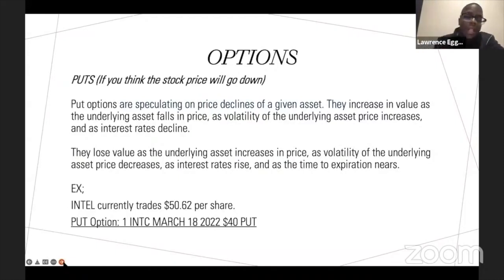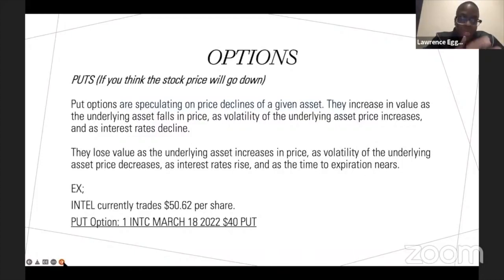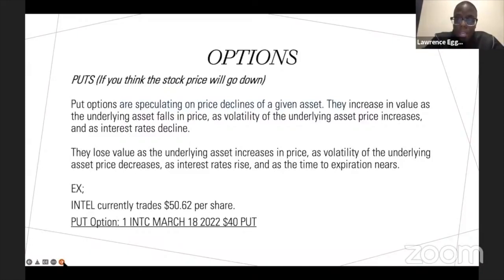On the opposite side, we have put options. Put options actually allow you to make money off of an asset's price going down. There's been a myth going around for years that you can only make money off the stock market going up — but you can actually make money off Apple, NVIDIA, Tesla, Intel, whatever stock coming down. You pay a specific premium, and if the stock price falls — for example Intel here at $50.62 — if Intel then falls $5, you can profit off of that.